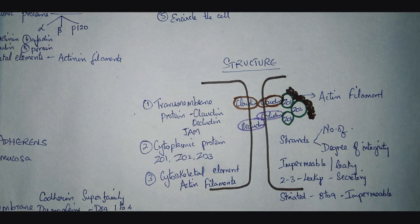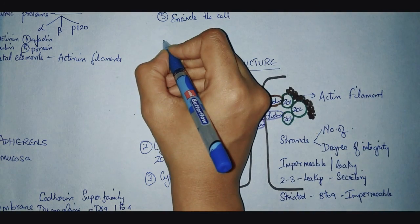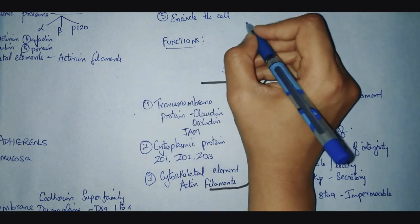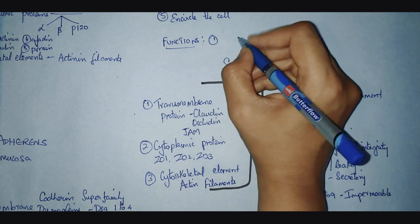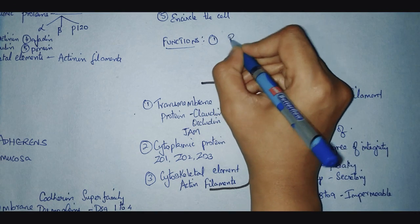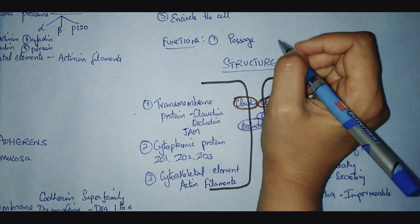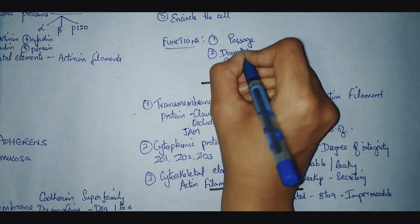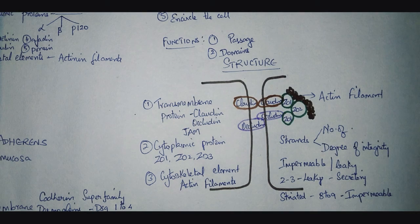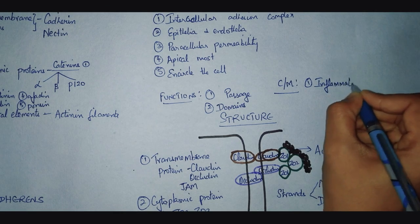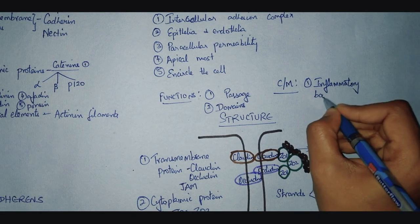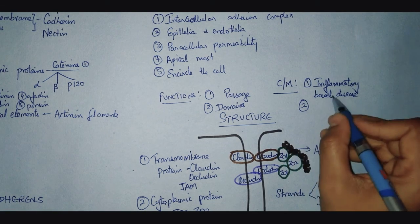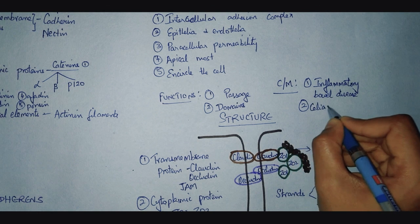Moving on to the functions of tight junctions: the first function is that they control the passage of material through the intercellular space. They also maintain the two important domains of the cell — the apical domain and the basolateral domain. Clinically, two diseases caused by dysfunction of tight junction proteins are inflammatory bowel disease and celiac disease.